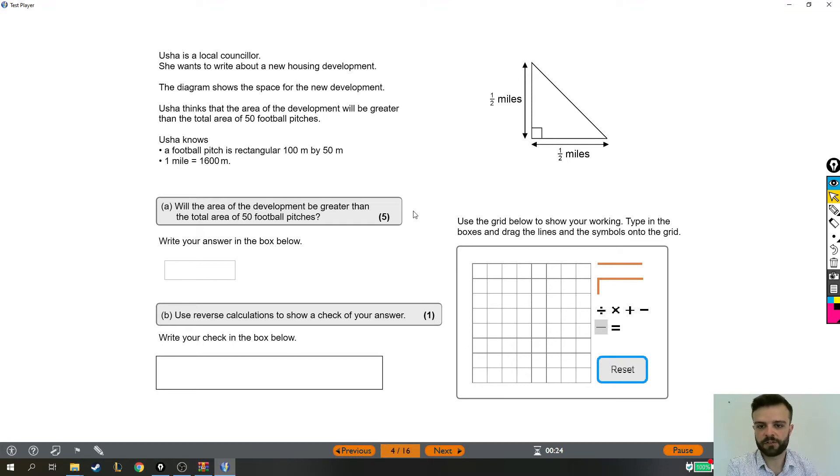Usher thinks that the area of the development will be greater than the total area of 50 football pitches. Usher knows that a football pitch is rectangular, 100 meters by 50 meters, and that one mile is 1,600 meters. Will the area of the development be greater than the total area of 50 football pitches?